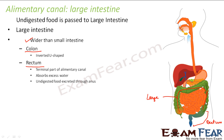Egestion takes place in the large intestine. Reviewing the steps of holozoic nutrition: ingestion happened at the mouth; digestion happened in the stomach and duodenum of the small intestine; absorption and assimilation happened in the jejunum and ileum of the small intestine; and egestion happened in the large intestine.